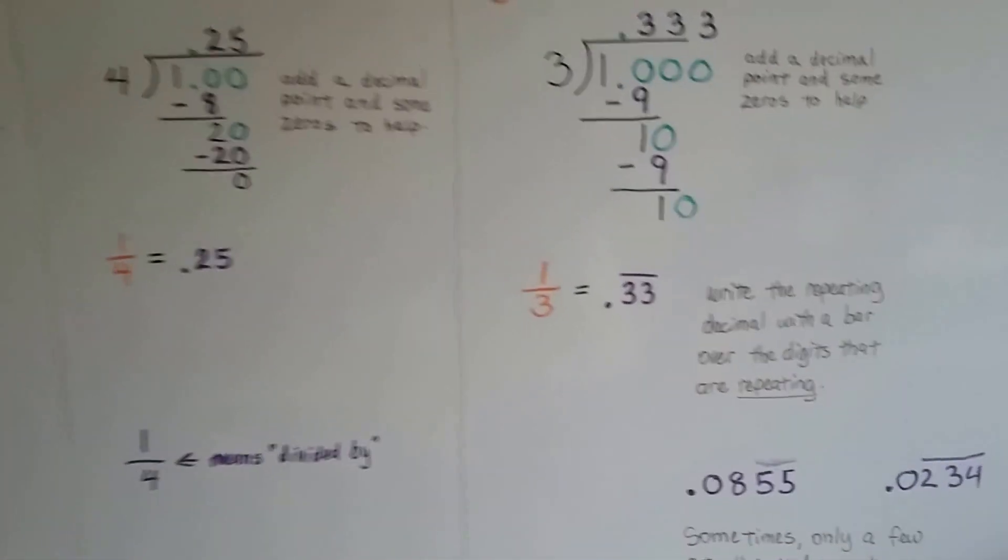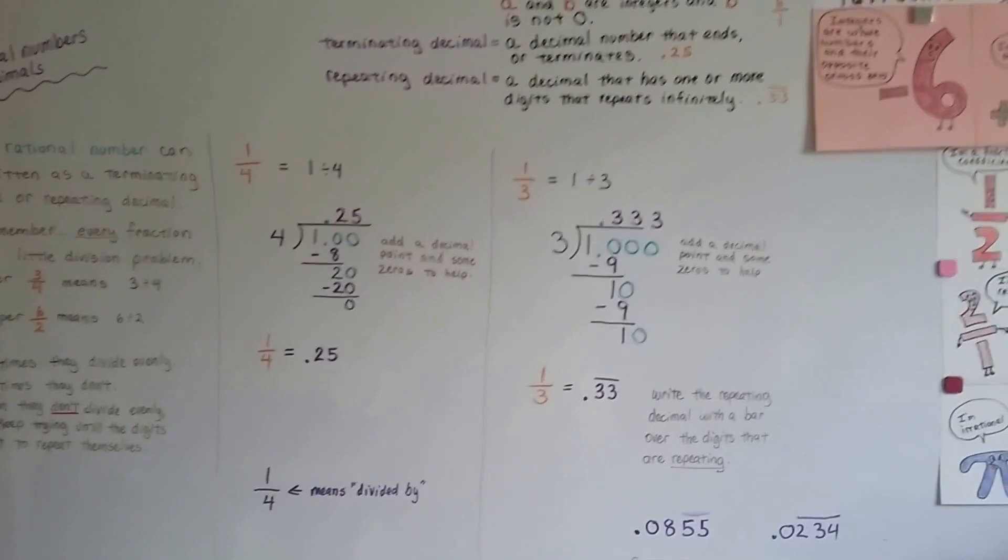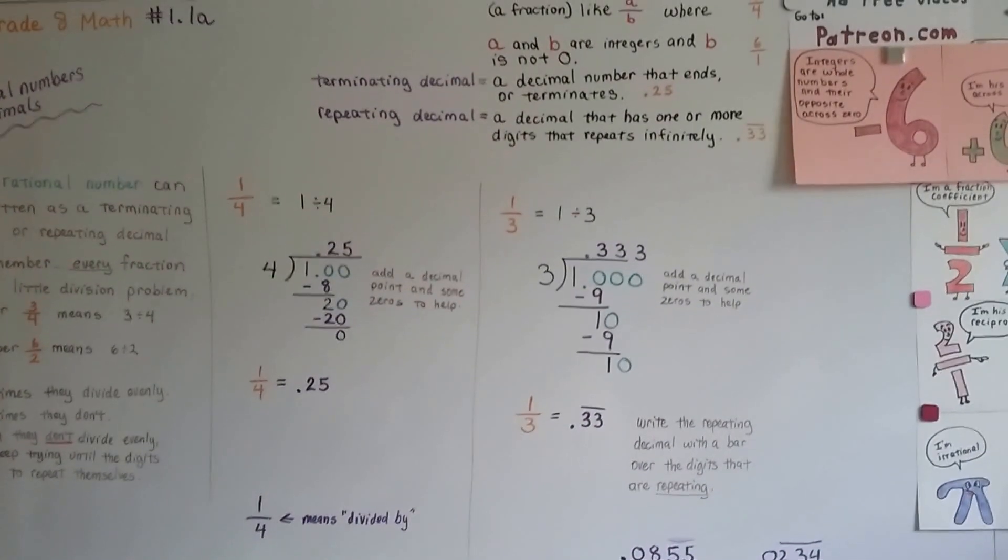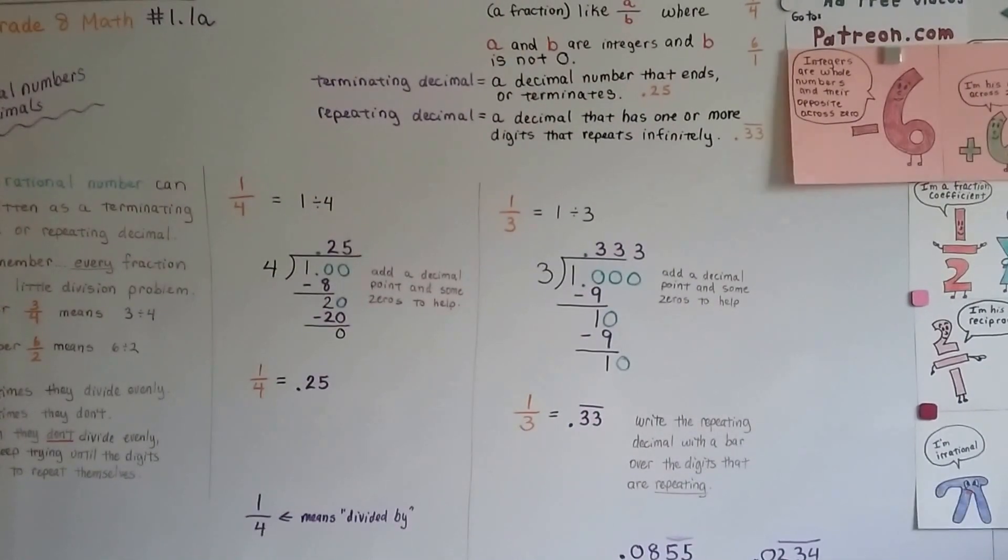Alright, so that's how to write rational numbers as decimals. And we're going to take decimals and write them as rational numbers in the next video. I hope this was helpful, and I'll see you next video. Bye!